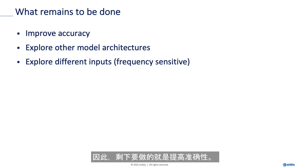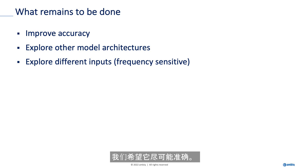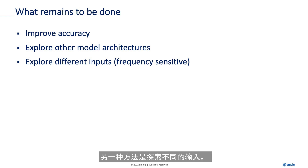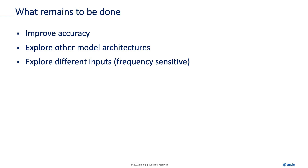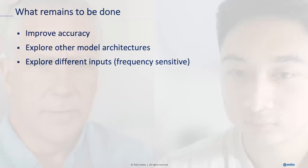What remains to be done is to improve the accuracy. We don't want a model that's even just a little bit inaccurate — we want it as accurate as possible. Some ways I could potentially improve accuracy are to explore other model architectures outside of autoencoders, and to explore different inputs, more specifically inputs that are frequency sensitive. Thanks, Evan.